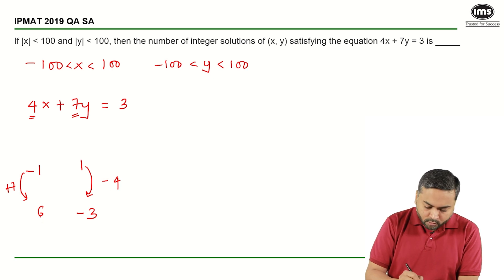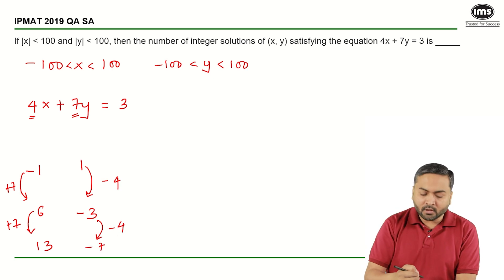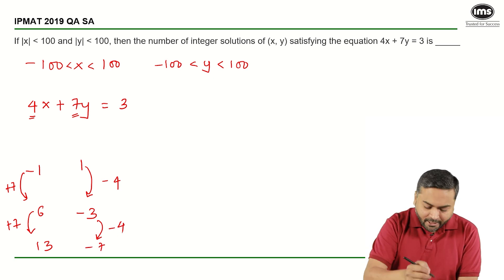Let's verify. So, 6 for the 24 and 7 into minus 3 is minus 21, that gives me 3. If I again do this plus 7, I will get 13 here. And what I will get here is minus 7 and this keeps on going. And it will keep on going on the other side as well.